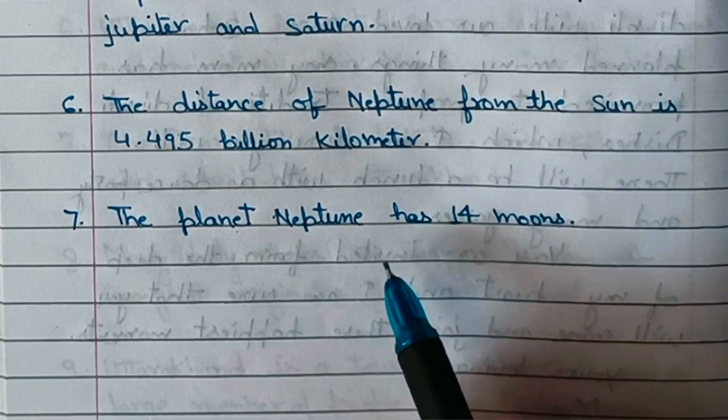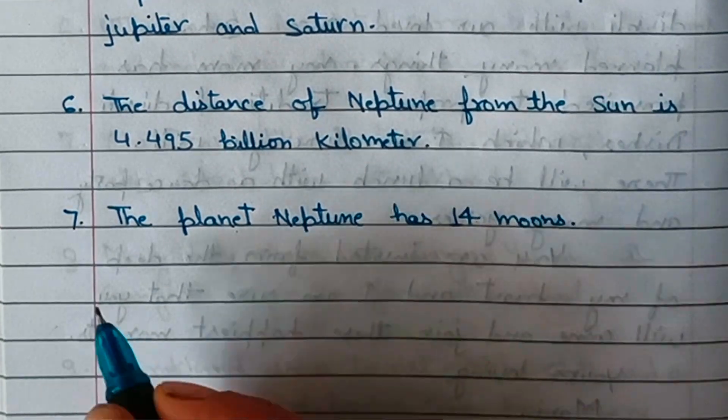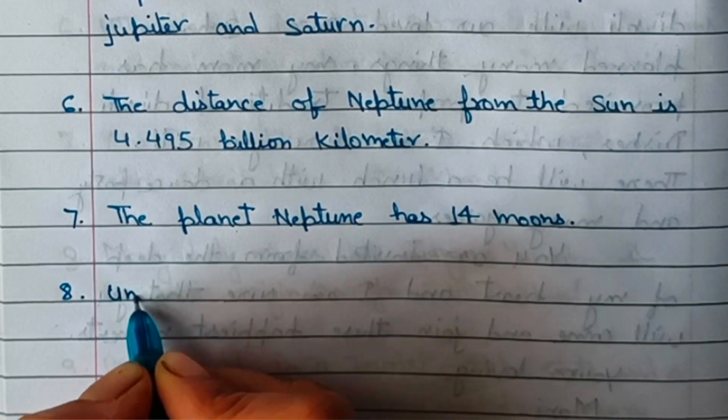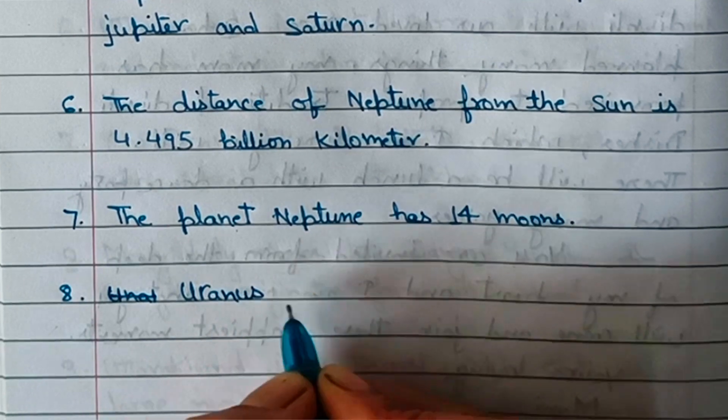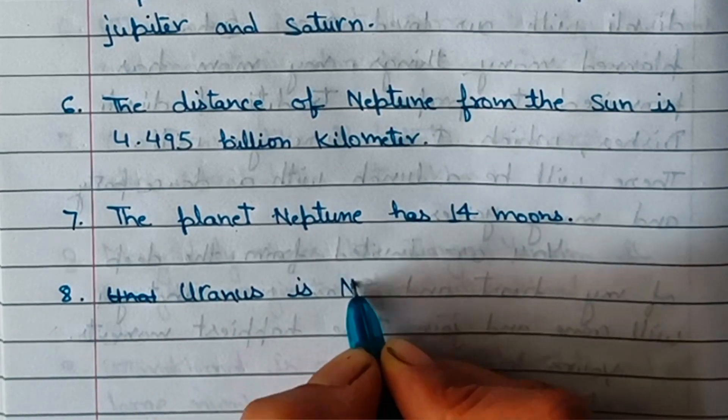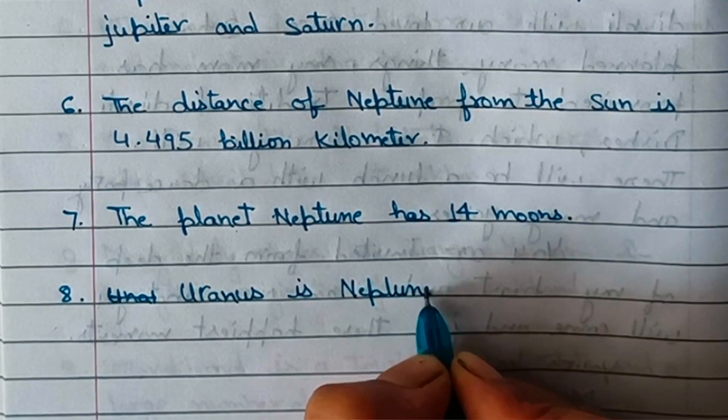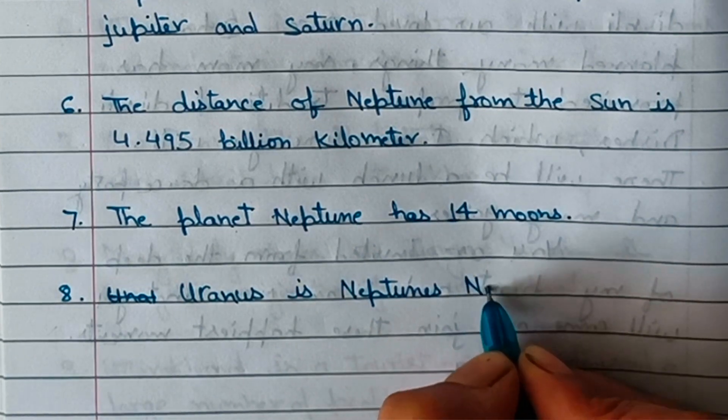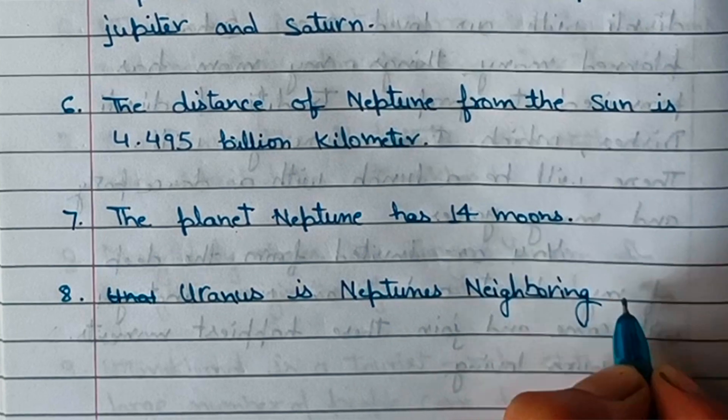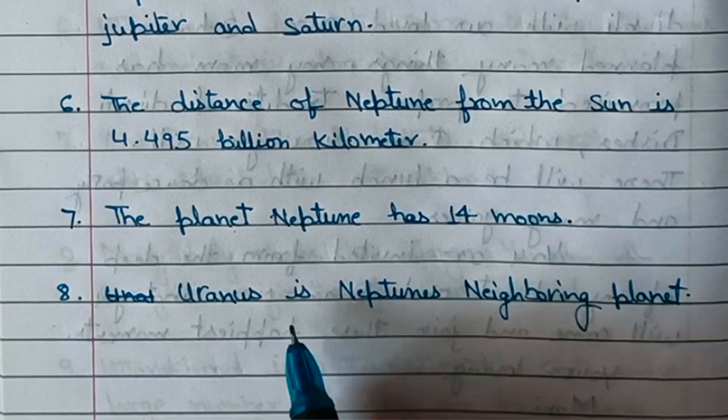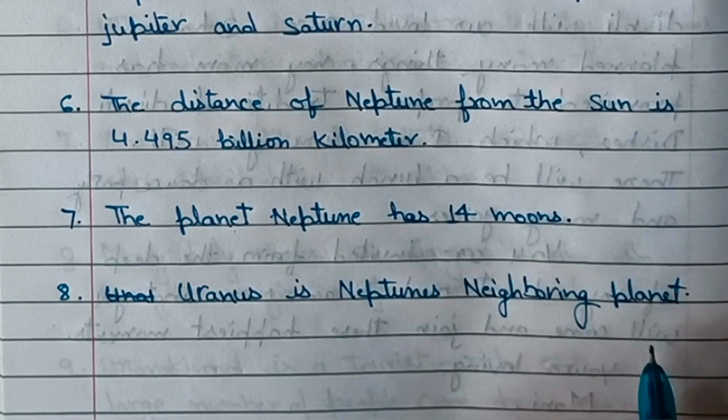The planet Neptune has 14 moons. Uranus is Neptune's neighboring planet.